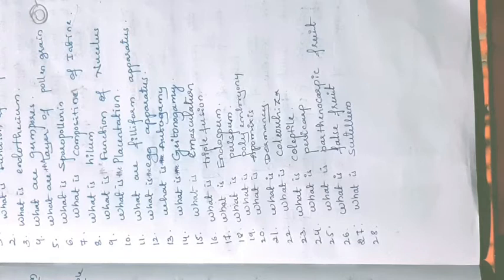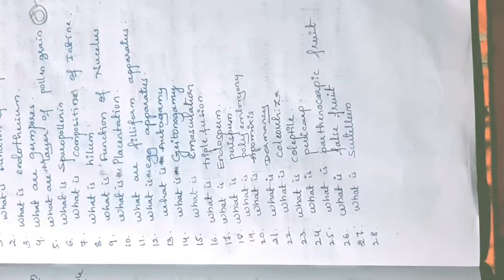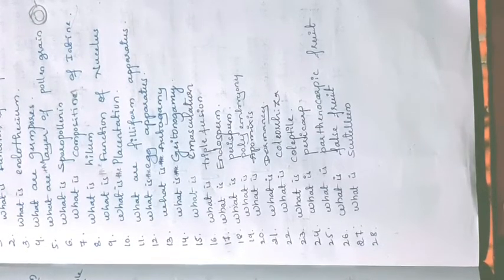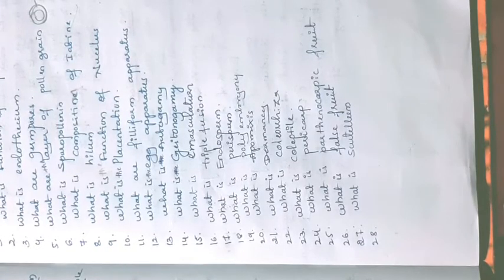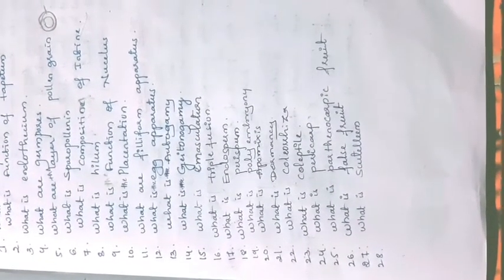What is polyembryony? Polyembryony is the presence of more than one embryo in a single seed. Polyembryony occurs when nucellar cells develop many embryos inside a single ovule. If you need more detail: the nucellar cells surrounding the embryo sac start dividing and enter the embryo sac, developing into individual embryos — that is why more than one embryo can be seen, and this is called polyembryony.